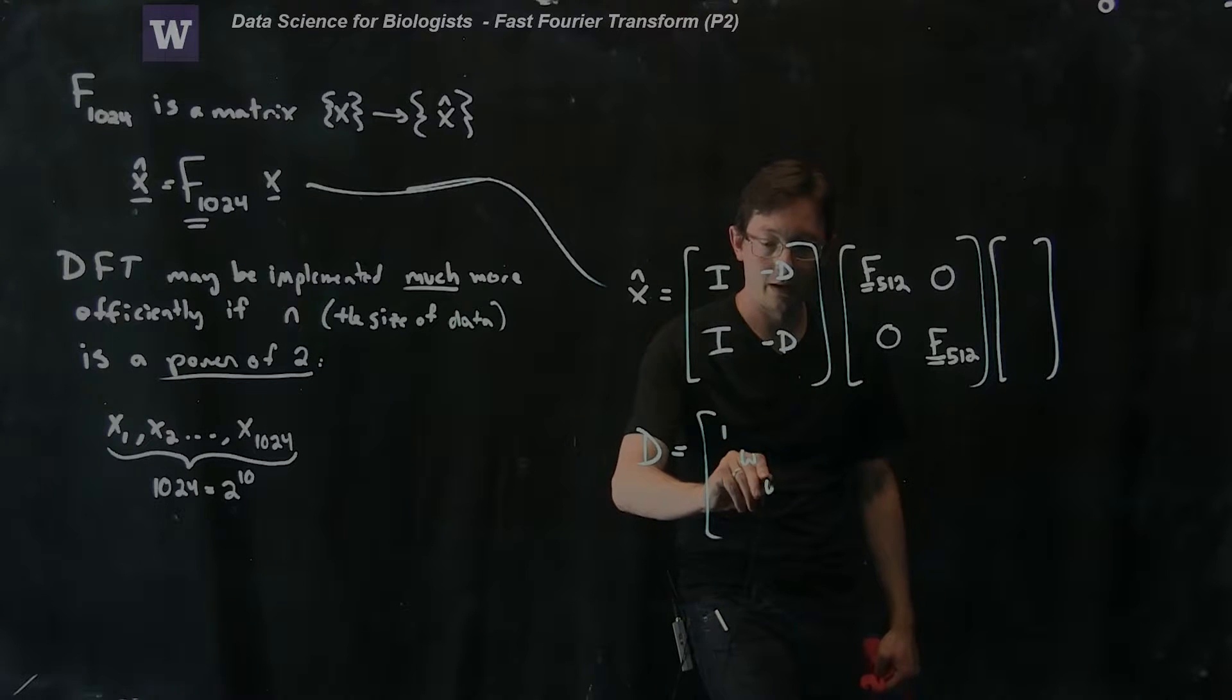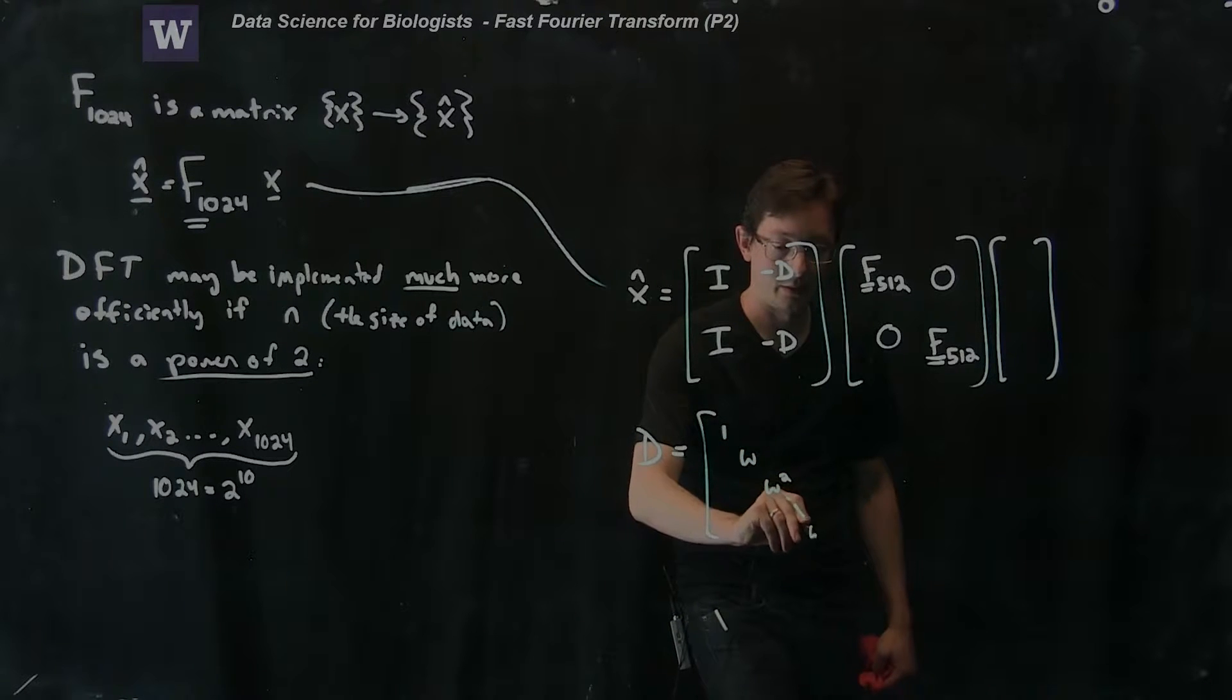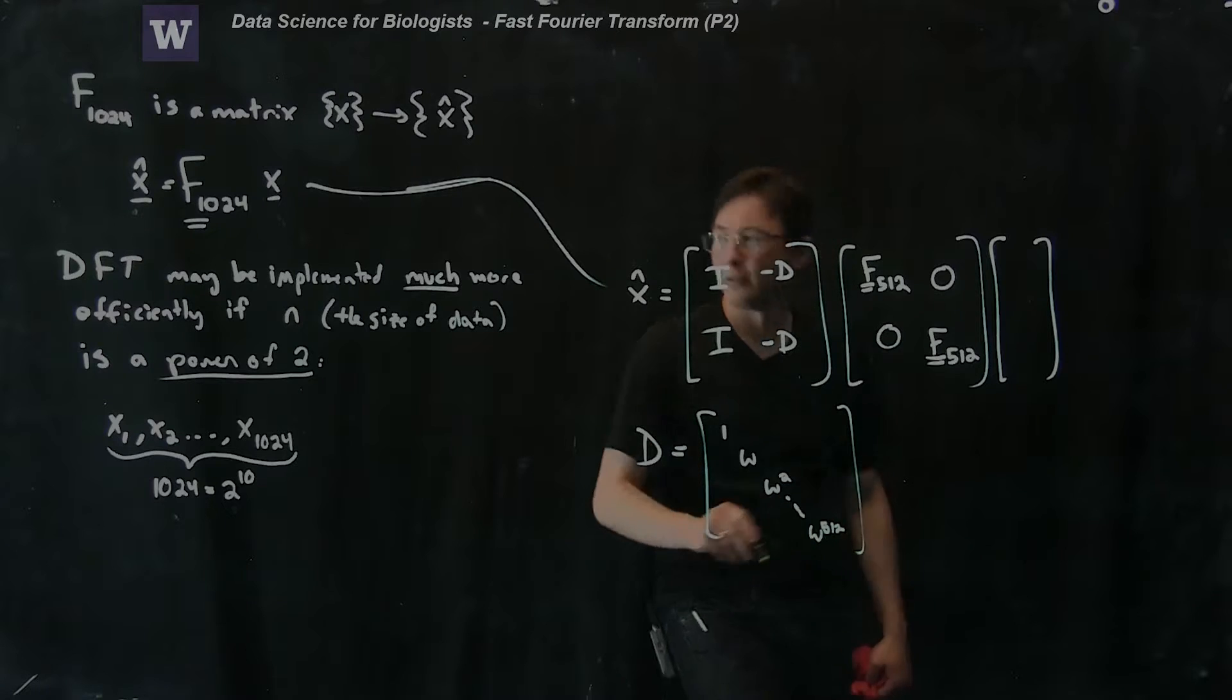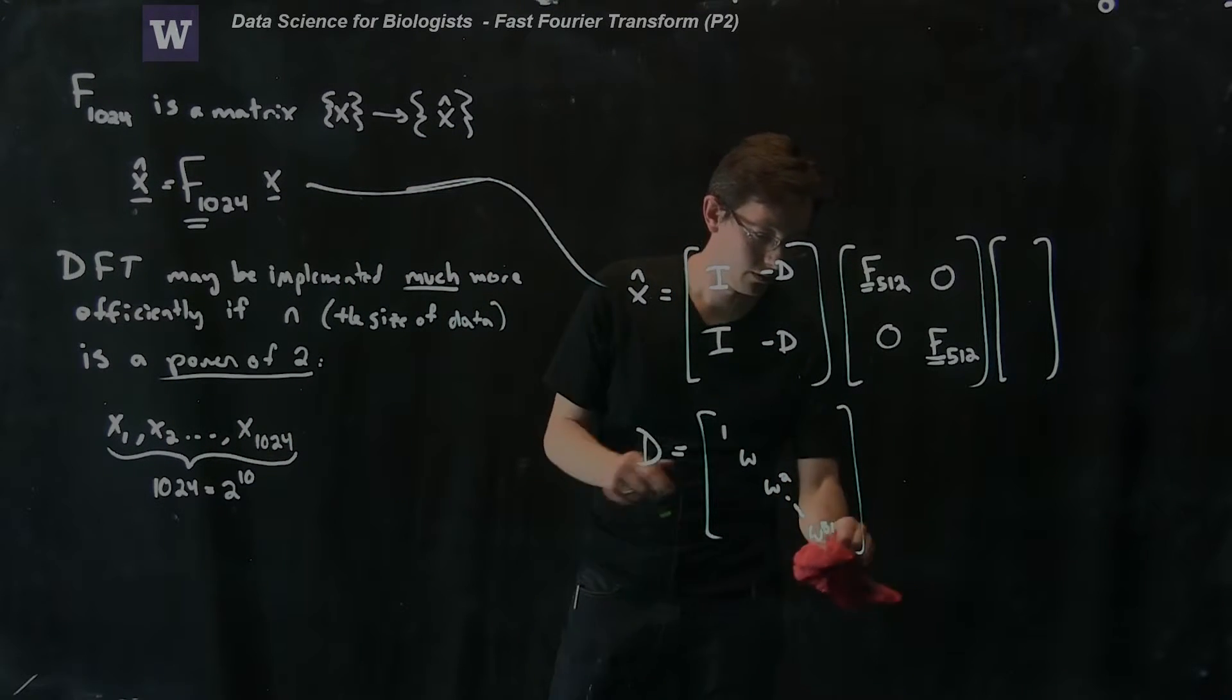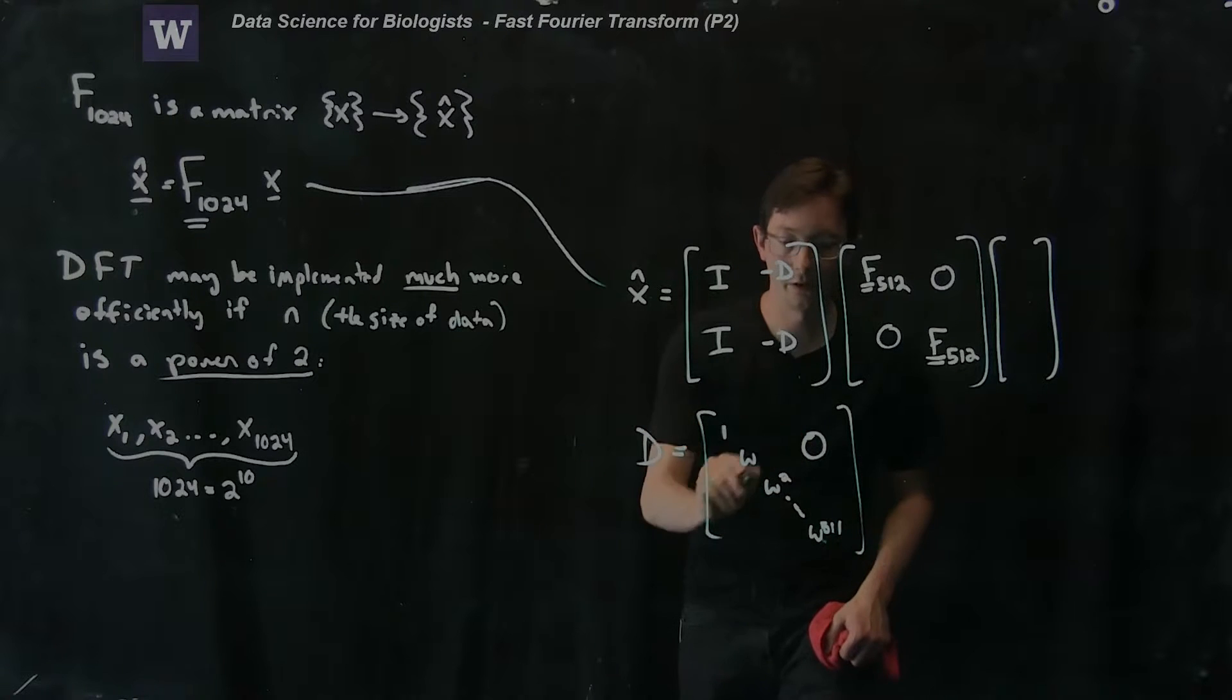Zero, one, omega, omega squared dot dot dot up to omega 512, or maybe 511, yeah that makes more sense, zeros everywhere else.